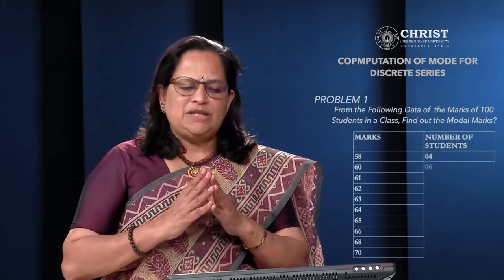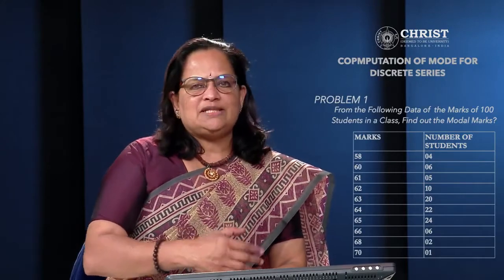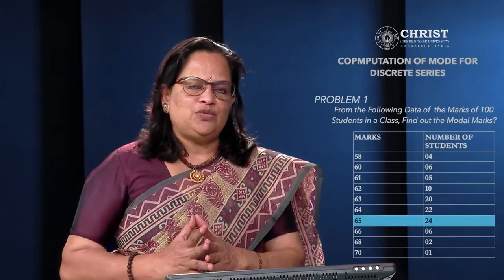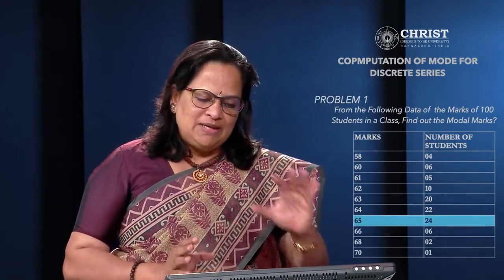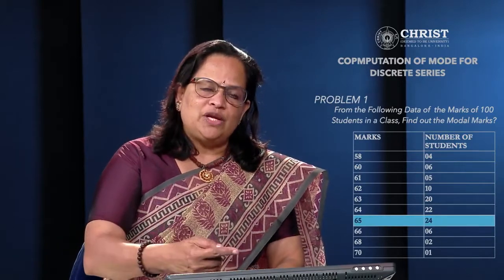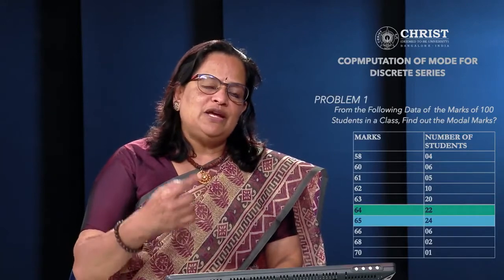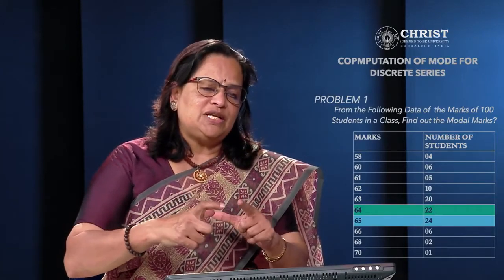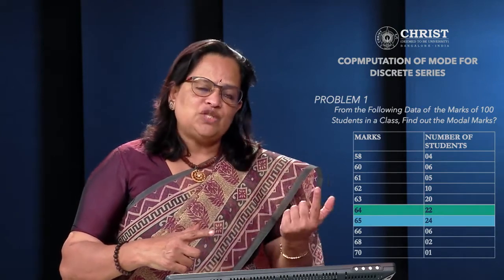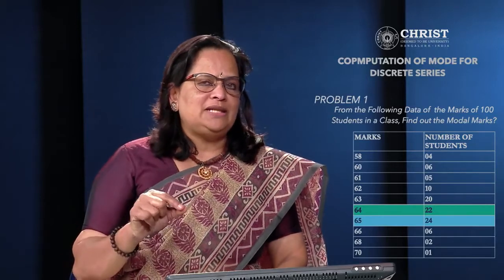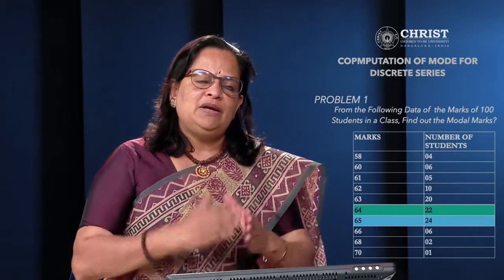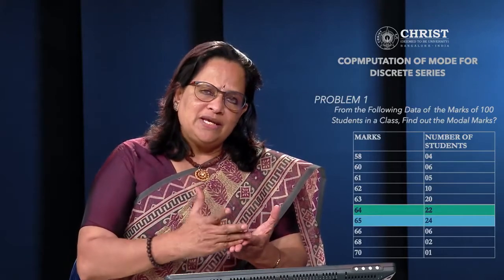With the problem: marks of 100 students — 58, 60, 61, 62, 63, 64, 65, 66, 68, and 70 — with frequencies 4, 6, 5, 10, 20, 22, 24, 6, 2, and 1. The highest frequency is 24, which belongs to marks 65. So by inspection, the modal value would be 65. However, the next highest frequency is 22 for marks 64 — the difference is very small — so it is advisable to do the grouping table and analysis table.